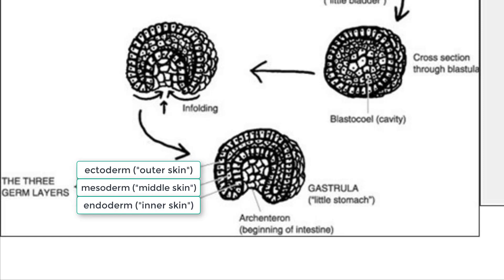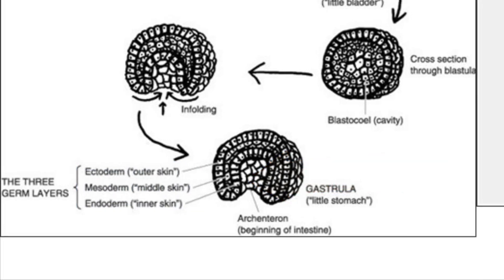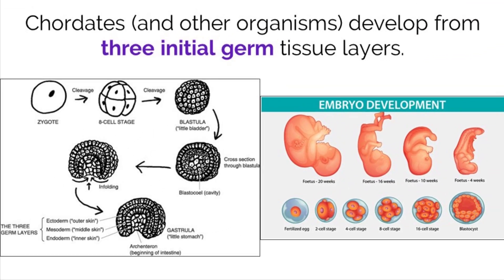For example, the innermost layer of cells, the endoderm, gets differentiated into what will become the intestines in the body as part of our internal digestive system. Now, why is this all important? We need to understand these layers to comprehend how our nervous system is created, which we will see in the following slide.